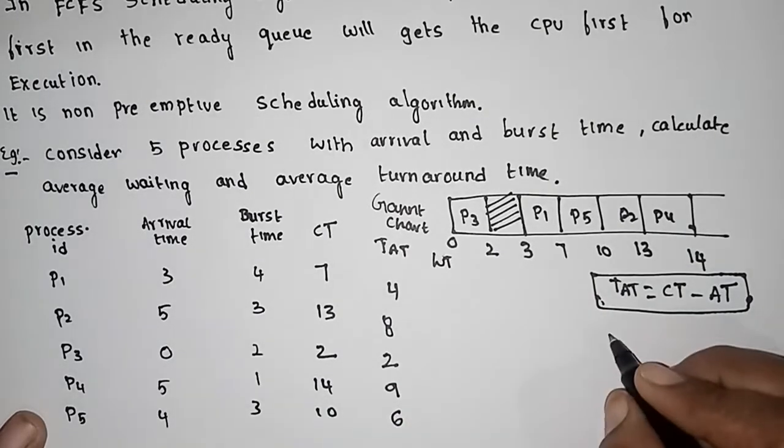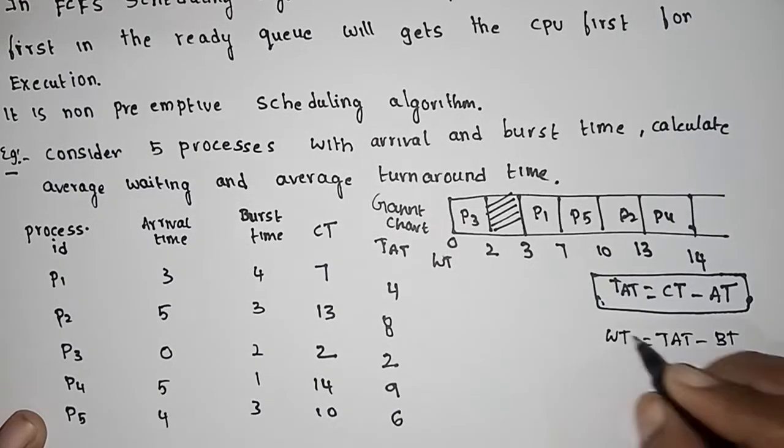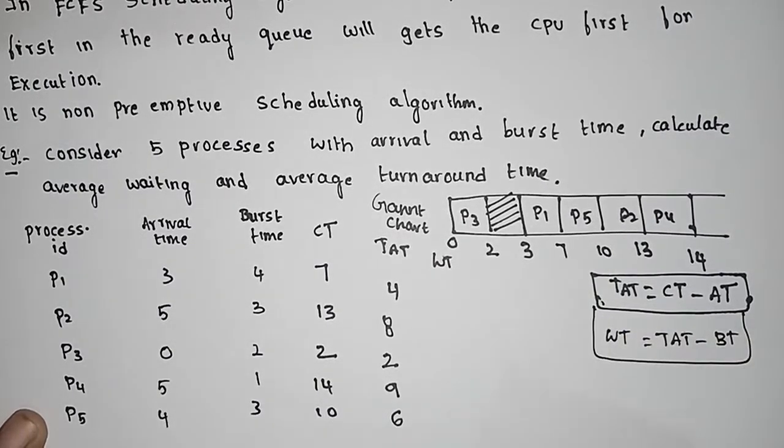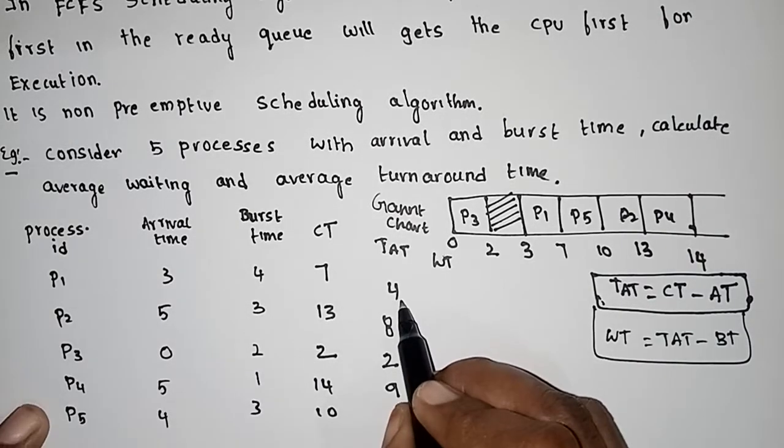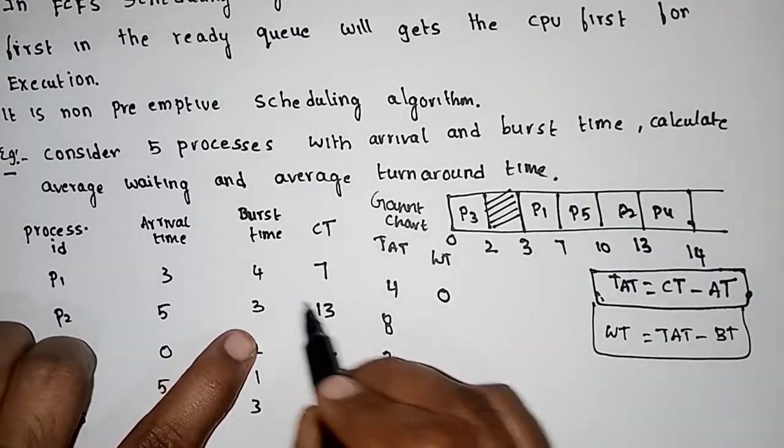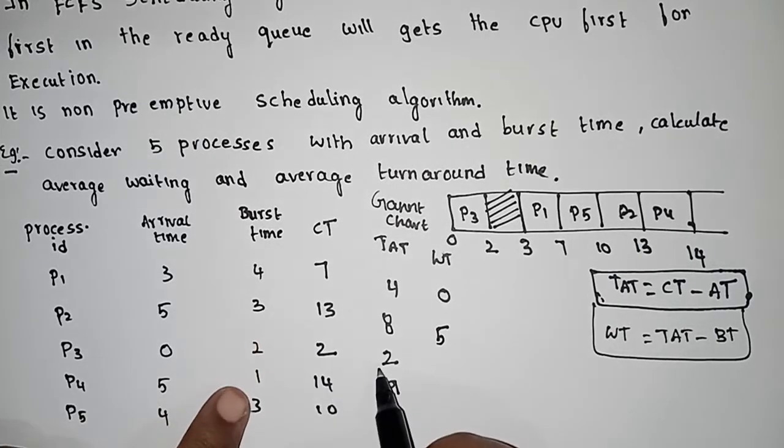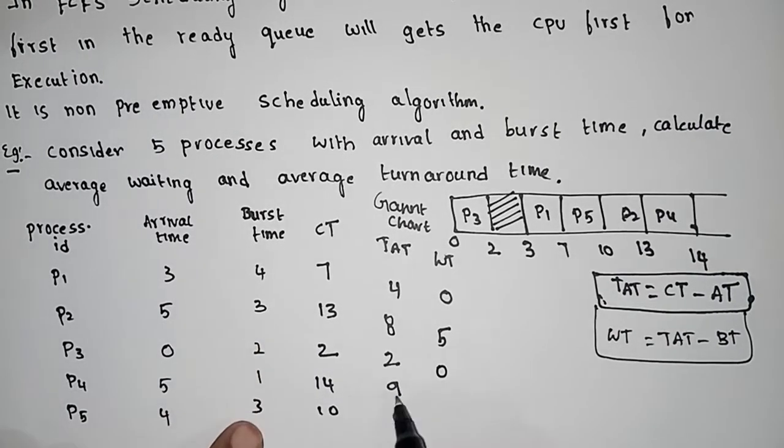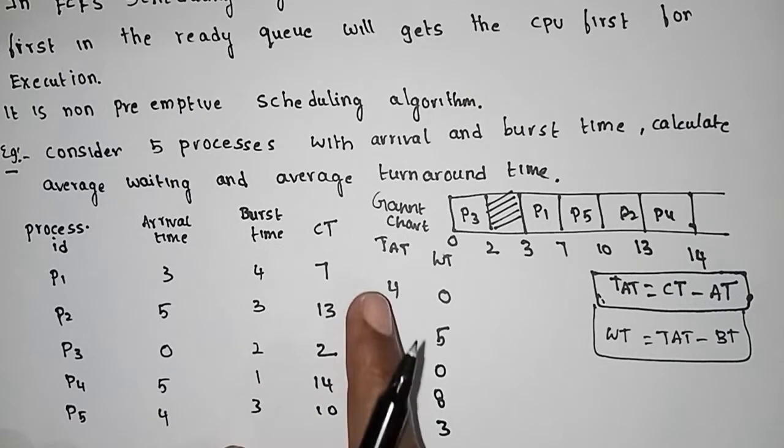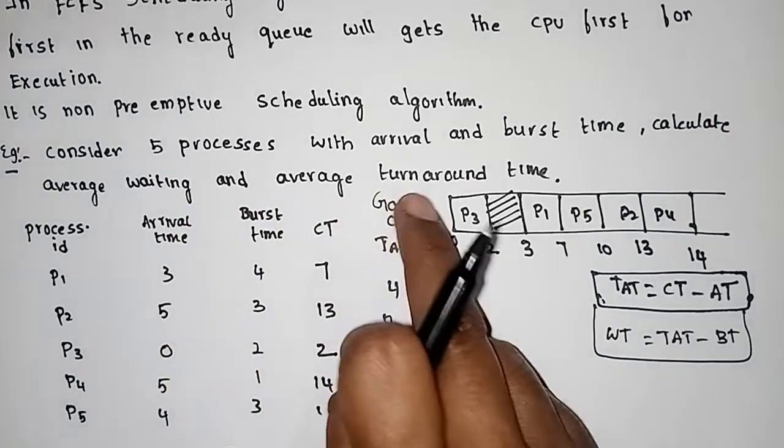Next, waiting time. Waiting time equals turnaround time minus burst time. For P5: 6 minus 3 equals 3. This is the waiting time.